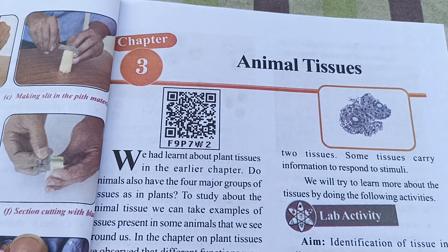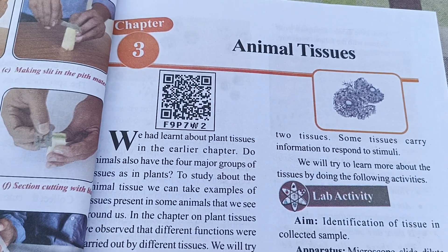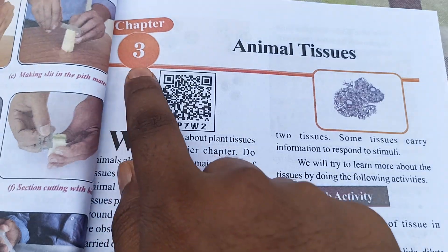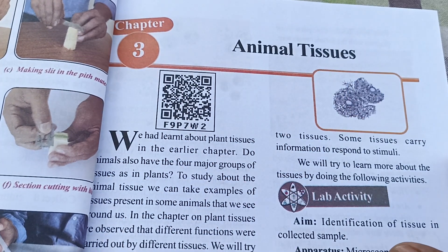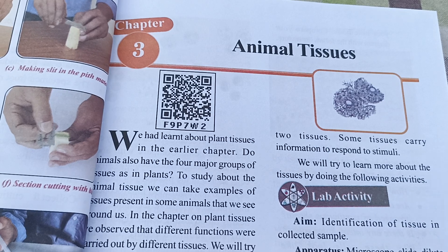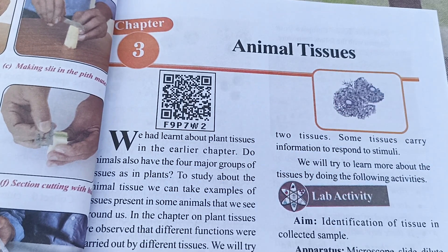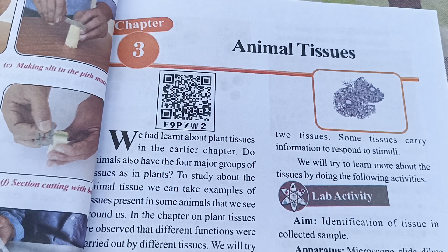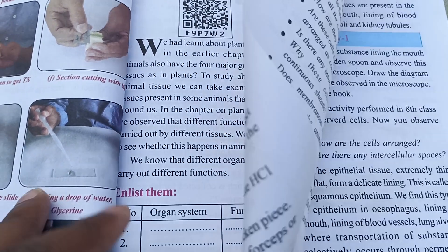Hello guys, how's it going? I hope everything is well. In this video we are going to talk about Class 9th Biology Chapter 3 - Animal Tissue. We are going to see all the question answers present in Chapter 3. In the previous video we already talked about Chapter 2 - Plant Tissue. So let's see the questions first, then we will move to the answers.